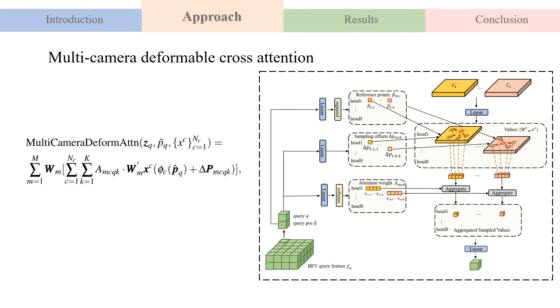Two learnable linear projection layers are used to predict the offset of the sampling points relative to the reference point, and the attention weight of these sampling points. Finally, the camera features at the sampled positions are aggregated by the attention weights to generate a new query.